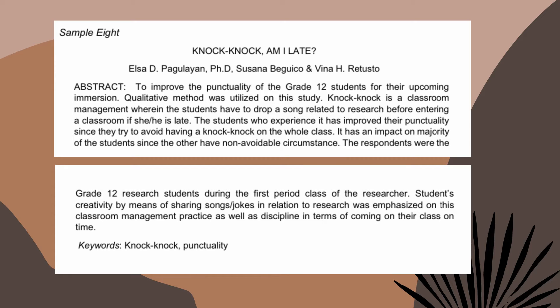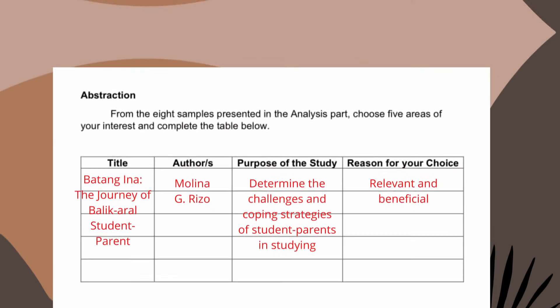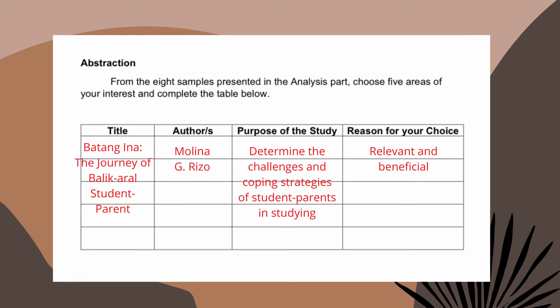You will notice that the abstracts present the objectives, hypotheses, key words or phrases, and the major results of the study. So by merely reading the abstract, you will know what the paper is all about. From those eight research papers, you have to choose only five which you find most interesting.